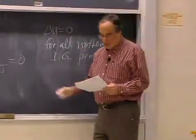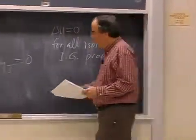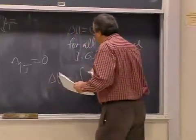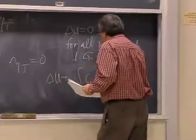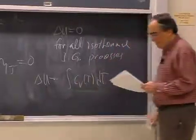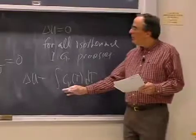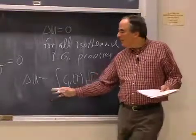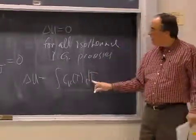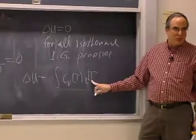And so that means that delta u is always calculable from Cv(T)dT for any ideal gas change. So even if work is done, it doesn't matter. All you care about is what was the temperature change.